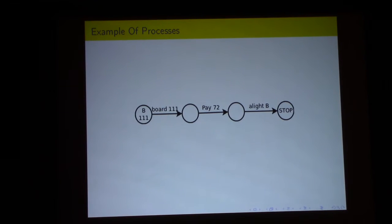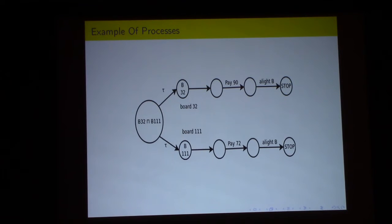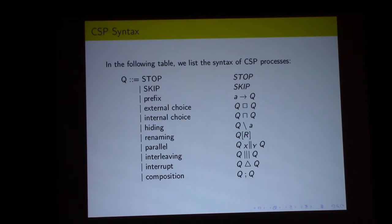CSP distinguishes between internal and external choice. For example, suppose we have a bus service where a passenger can take bus 111, board it, pay 72p, alight in area B, and stop. If the passenger wants to choose between buses, the external choice allows the passenger to select. The internal choice hides this from the environment — the buses simply arrive and the passenger picks one without choosing between them. Remaining operations include hiding, renaming, parallel, interleaving, interrupt, and sequential composition.